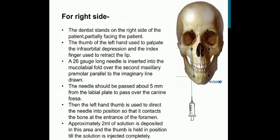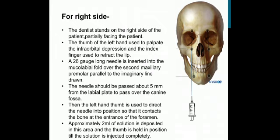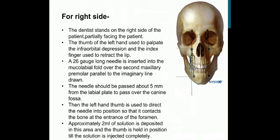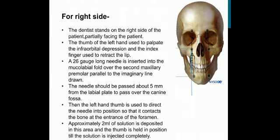For the right side, the dentist stands on the right side of the patient, partially facing the patient. The thumb of the dentist's left hand palpates the infraorbital depression and the index finger retracts the lip. A 26-gauge long needle is inserted into the mucobuccal fold over the second maxillary premolar, parallel to the imaginary line drawn, approximately 5 mm from the labial plate to pass over the canine fossa. The left hand thumb then directs the needle into position so it contacts bone at the entrance of the foramen, and approximately 2 ml of solution is deposited while the thumb is held in position until the solution is completely injected.